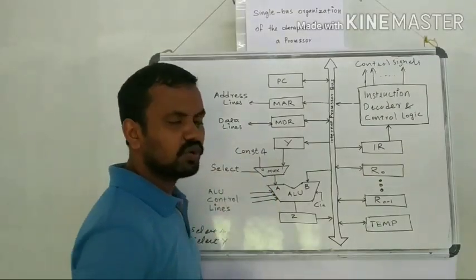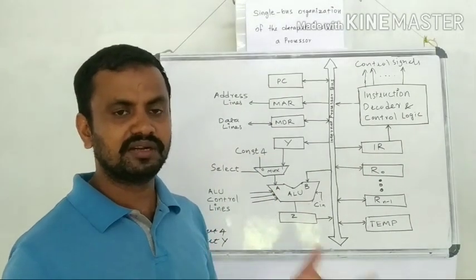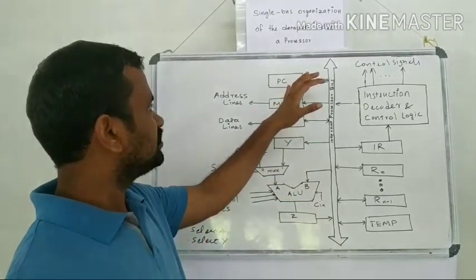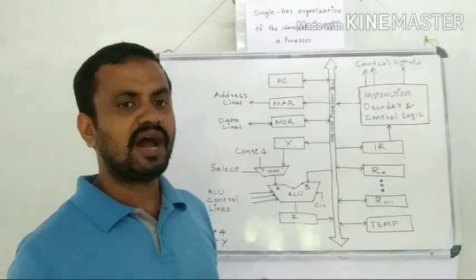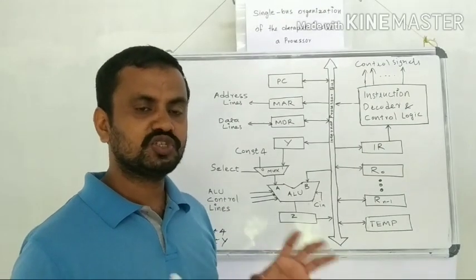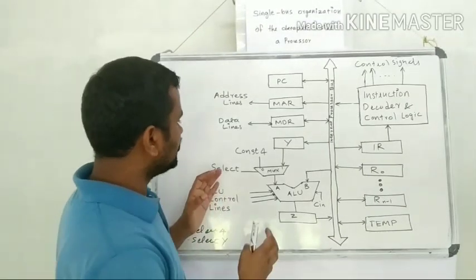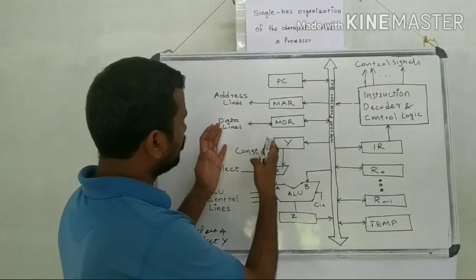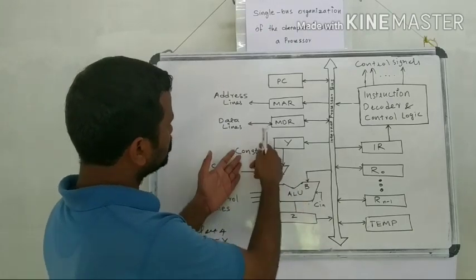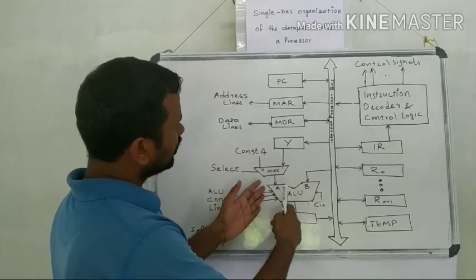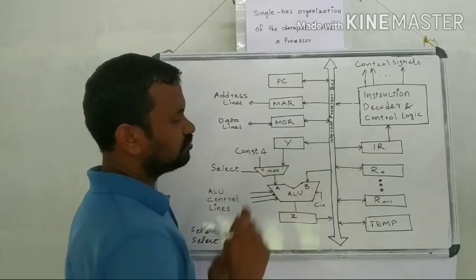Then what is the purpose of the constant 4? This constant 4, as we already know, PC is our program counter. So after fetching one instruction, the value of the PC has to be updated or incremented by 4. So that function will be done by using this constant 4. To increment the PC value, this constant 4 will be selected and that will be added with PC, and the updated PC value will be generated. That is the use of the constant 4.